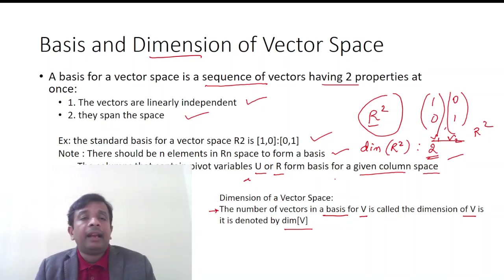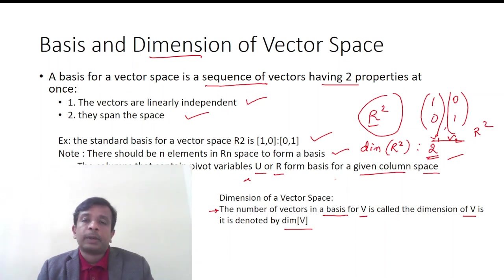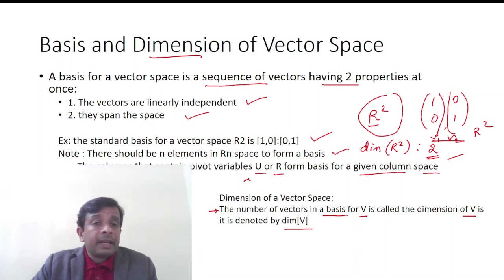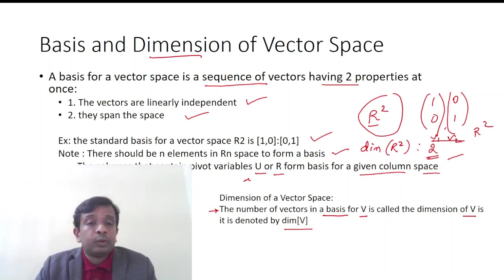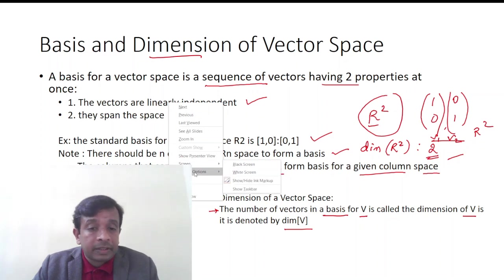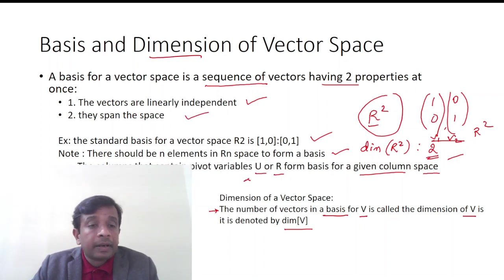Continuing further, let us examine two points with respect to vector space: basis and dimension of vector space. A basis for a vector space is a sequence of vectors having two properties — the vectors are linearly independent and they span the entire vector space.